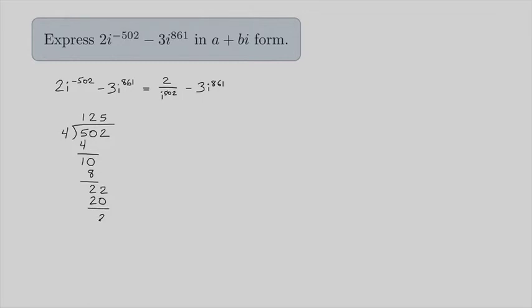I have 22, 4 goes into 22 five times, that's 20, 22 minus 20 is 2. This is my remainder.